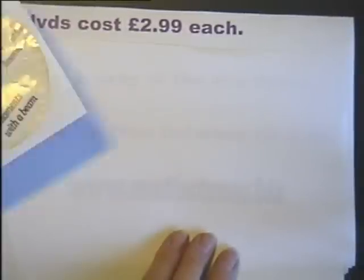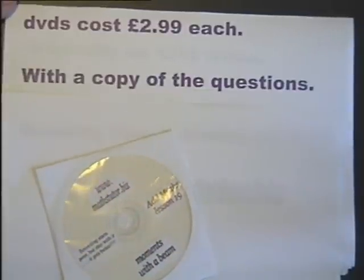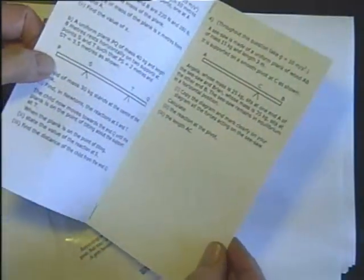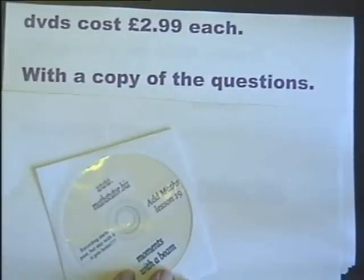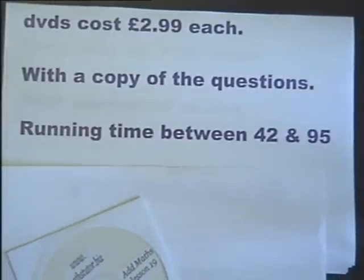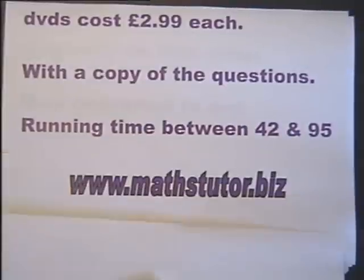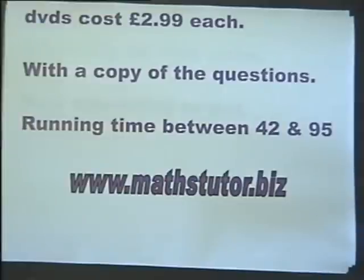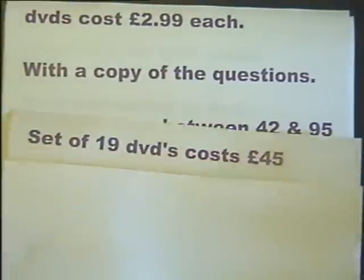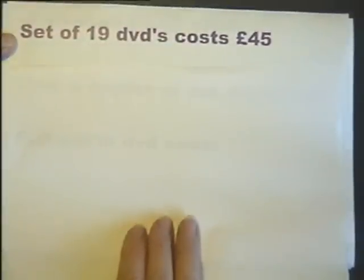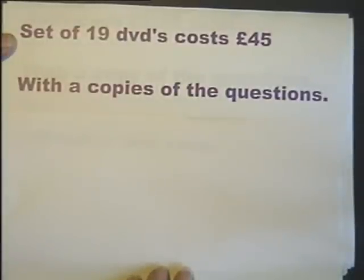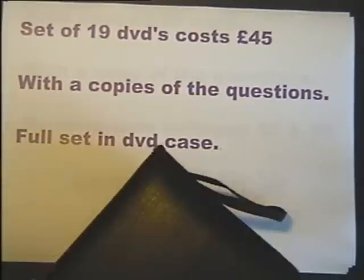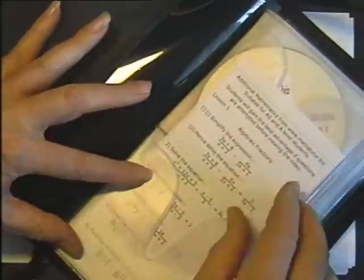The DVDs can be purchased individually for £2.99 each, and with each DVD is supplied a printed copy of the questions answered in the video. The running time for each DVD is between 42 and 95 minutes, with individual running times for each of the 19 DVDs listed at MathTutor.biz. The full set of 19 DVDs along with printed sheets of all the questions can be purchased for £45, supplied in a DVD case with questions for each DVD included.